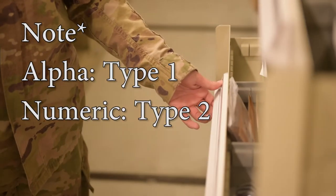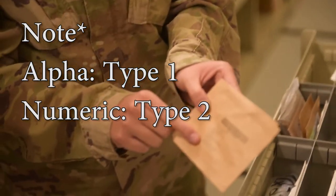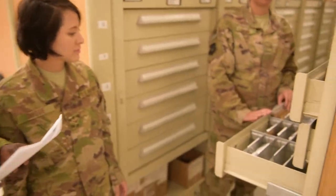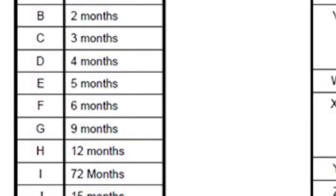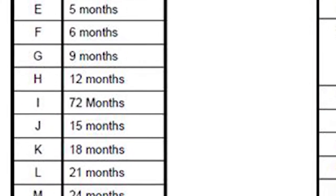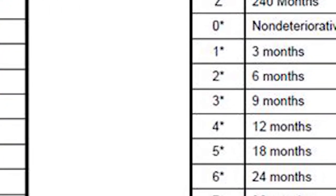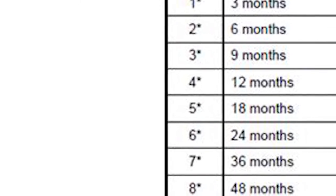Each shelf life item should have either an alpha, type 1, or numeric, type 2, code assigned to the item record to identify the particular asset as shelf life. You will be able to find the appropriate code in ESS, such as the type cargo code for ESD items. Type 1 alpha codes are non-extendable, meaning once the expiration date is reached, the asset is no longer suitable for use. While type 2 numeric codes are extendable and can be extended past their expiration date if authorized by the shelf life extension system.